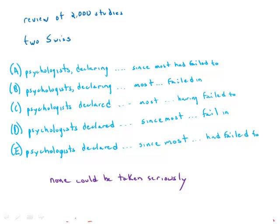In a review of 2,000 studies of human behavior that date back to the 1940s, two Swiss psychologists declaring that most of the studies had failed to control for such variables as social class and family size, none could be taken seriously. That's an awkward sentence.